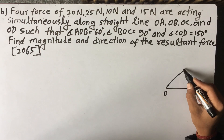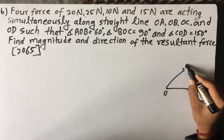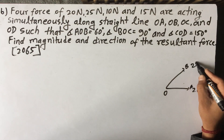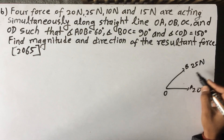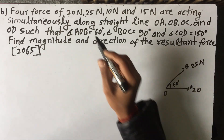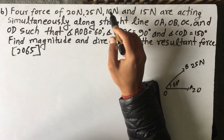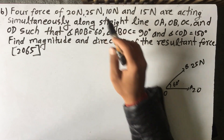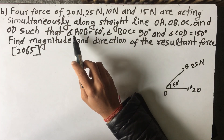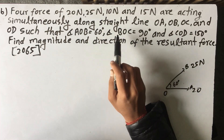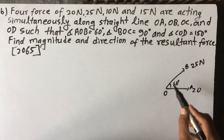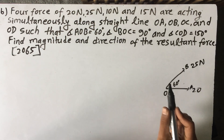So OB — I am going to make OB. I am going to make an angle of 60 degrees. And OC is 10 Newton. And OAB to OC is 90 degrees. And B to OC is 90 degrees.